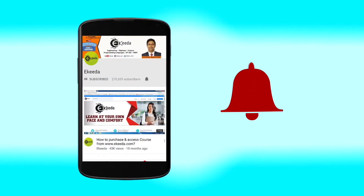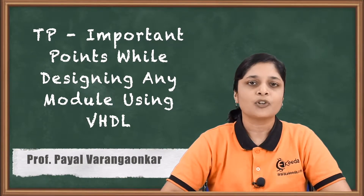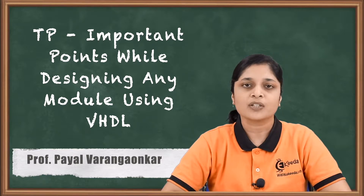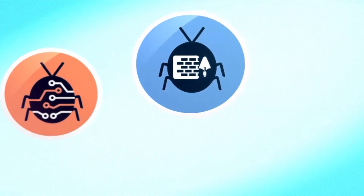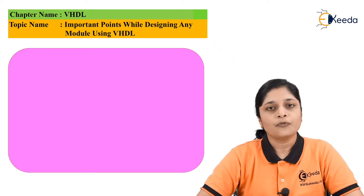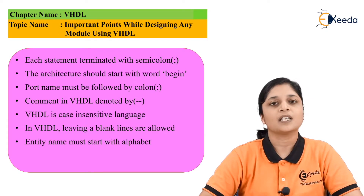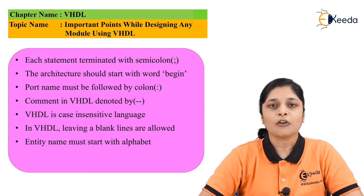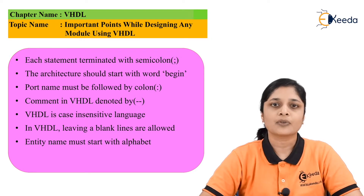Now we are going to discuss some important points while designing any module using VHDL. The first point is that each statement in a VHDL program should be terminated by a semicolon. The architecture of the program should start with the keyword 'begin'. Always, the port name inside the entity must be followed by a colon.